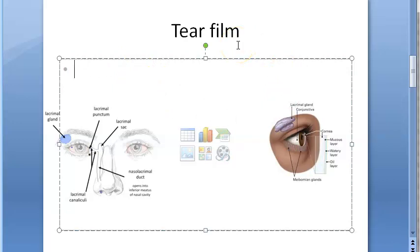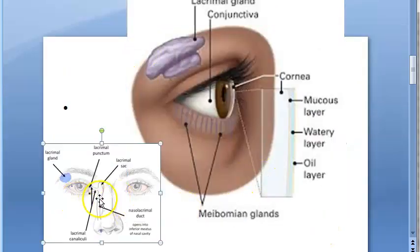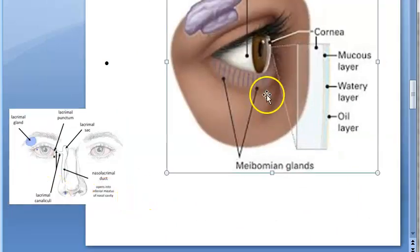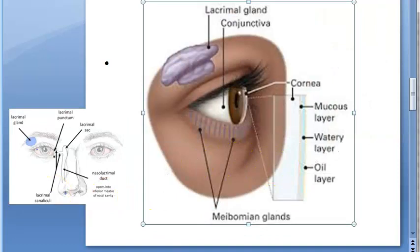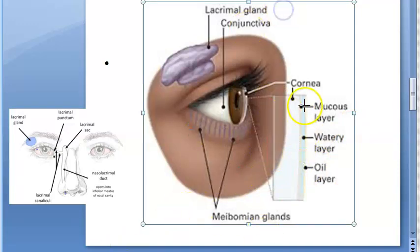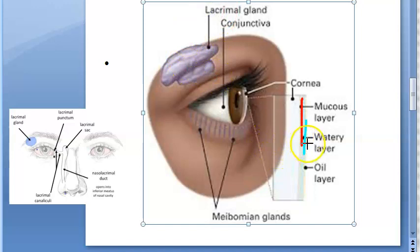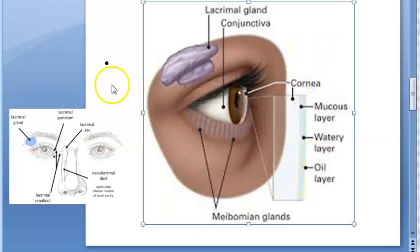There are three parts to the tear film. You have the mucus layer, then you have the watery or aqueous layer, and then you have the oily layer. So you have three parts to this tear film - that is why it is called a tear film.